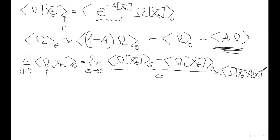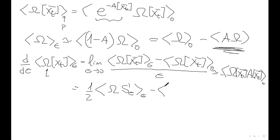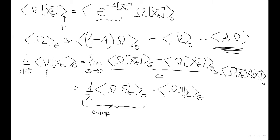So for any observable, there are two contributions to the response: an entropic term and a frenetic term. This was a very important insight of this theory — that entropy and frenesy contribute equally to the response of any observable. The factor in front of the entropy term is one-half and the frenesy term has factor one.